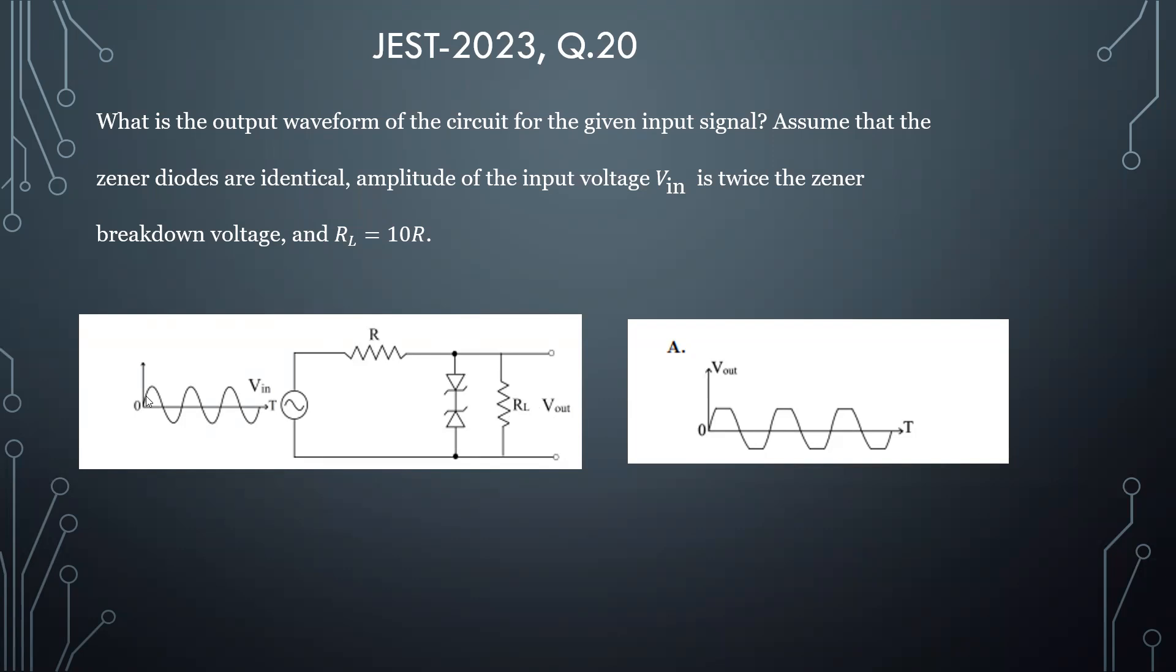When your input reaches half of the amplitude, this path will start conducting and you will get a constant voltage equal to the zener breakdown voltage. And whenever input goes down, then this range comes back and it follows the input.